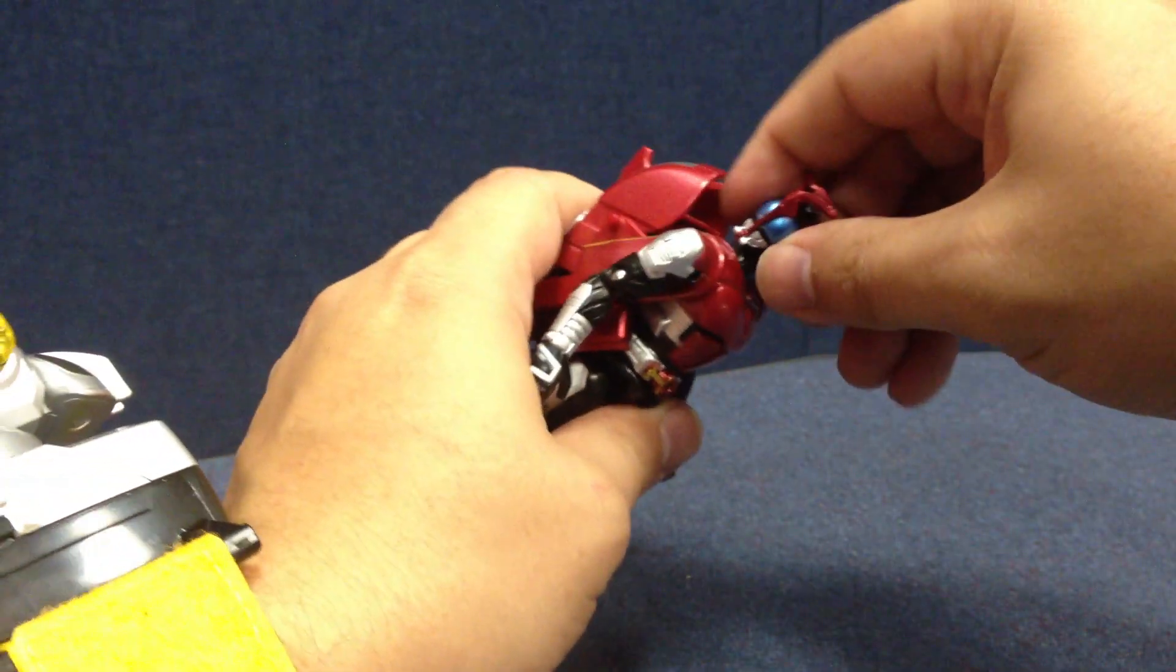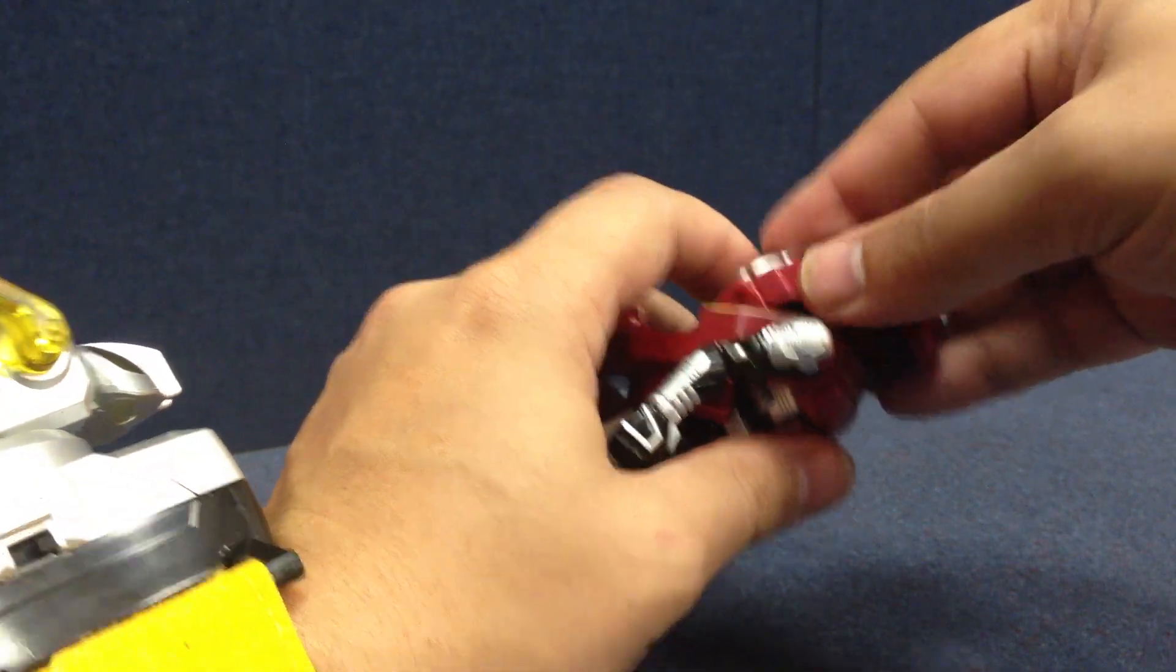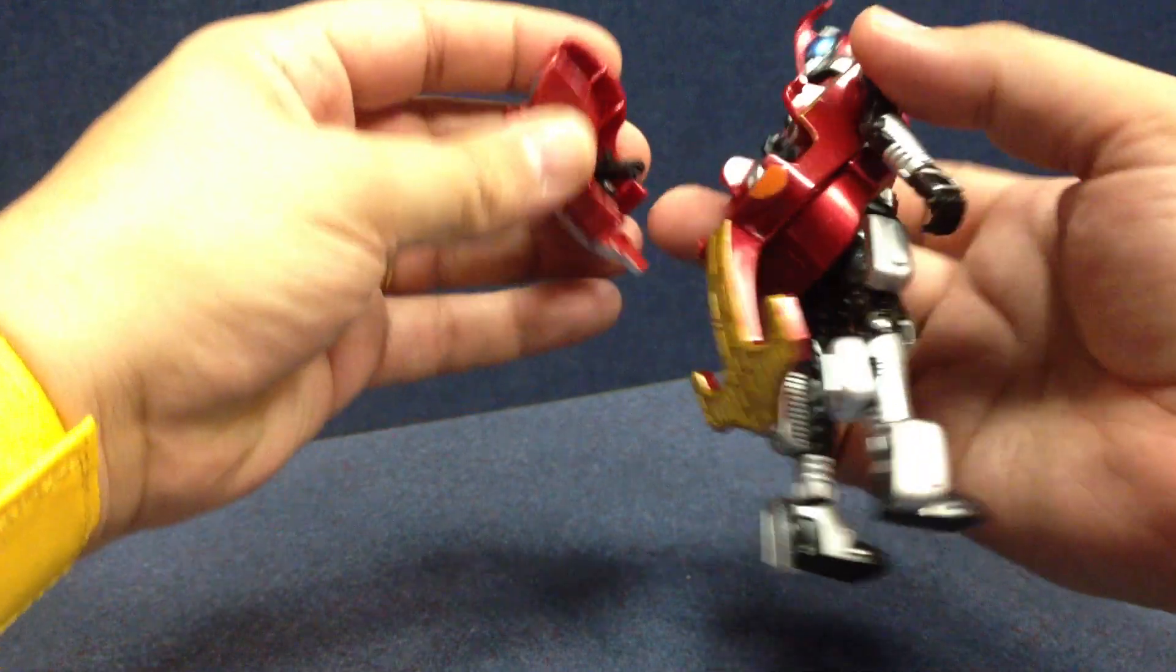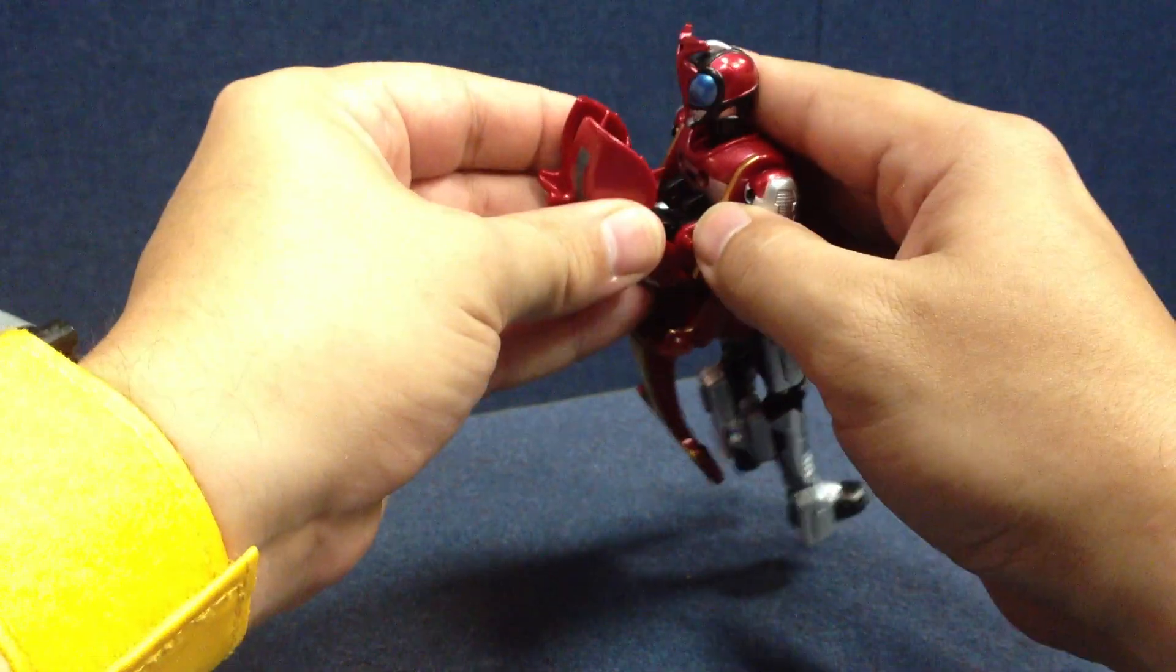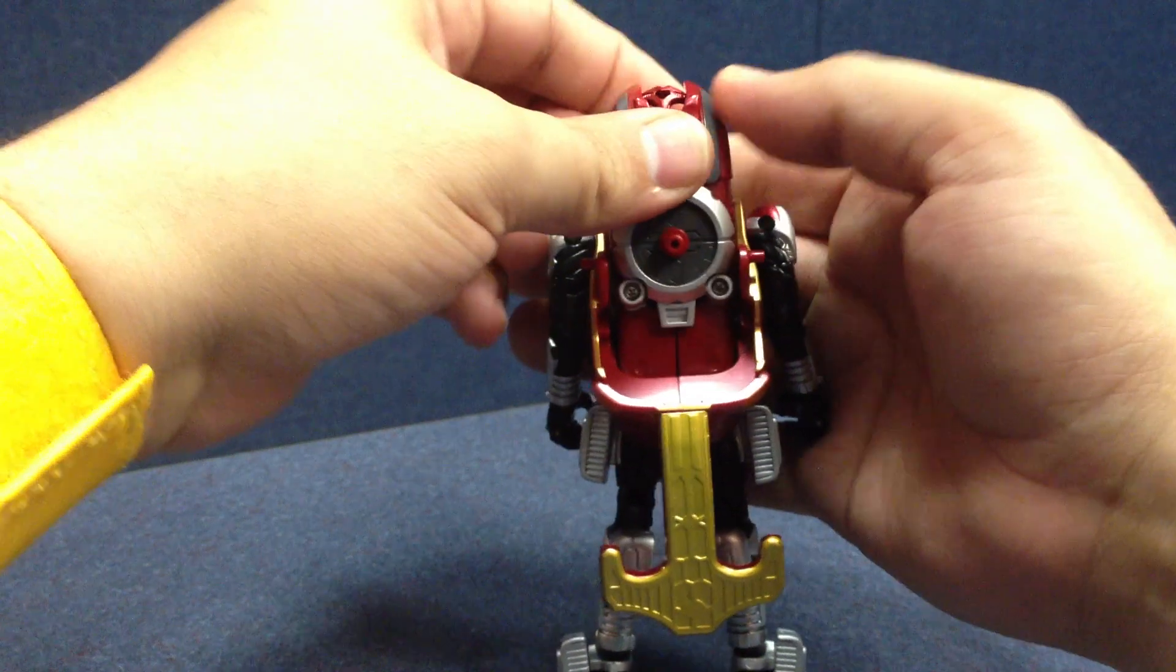But anyway, he just turns his head around like this. Bring it up. That piece tabs into the back. And this piece actually comes separate, and you have to tab it in. And it's not the strongest hinge there, but bring his head down.